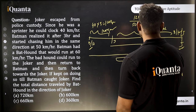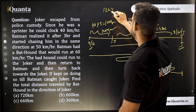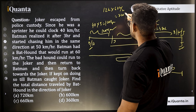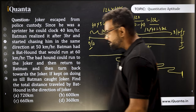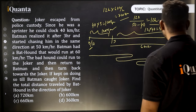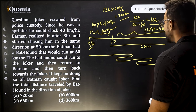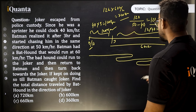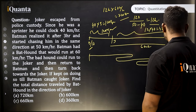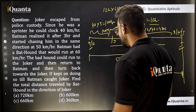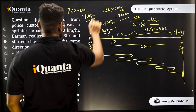Batman covers 600 km total from his starting position. Now, in these 12 hours, how much distance does the hound travel? 12 hours × 60 km/h = 720 km total. Out of this 720 km, the hound must travel at least 600 km in the forward direction — because if it doesn't cover at least 600 km forward, it cannot reach the point where Batman catches Joker. So the minimum forward distance is 600 km, leaving 720 − 600 = 120 km.